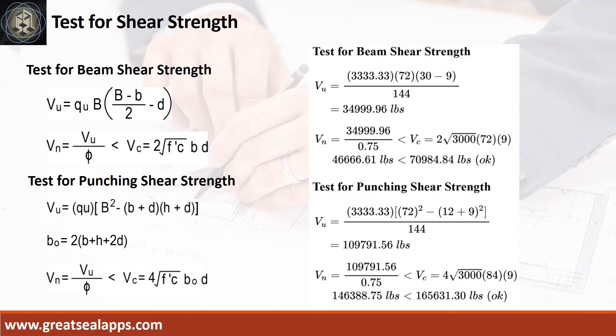The maximum beam shear force is 34,999.96 pounds. The nominal beam shear force is 46,666.61 pounds, less than 70,984.84 pounds.